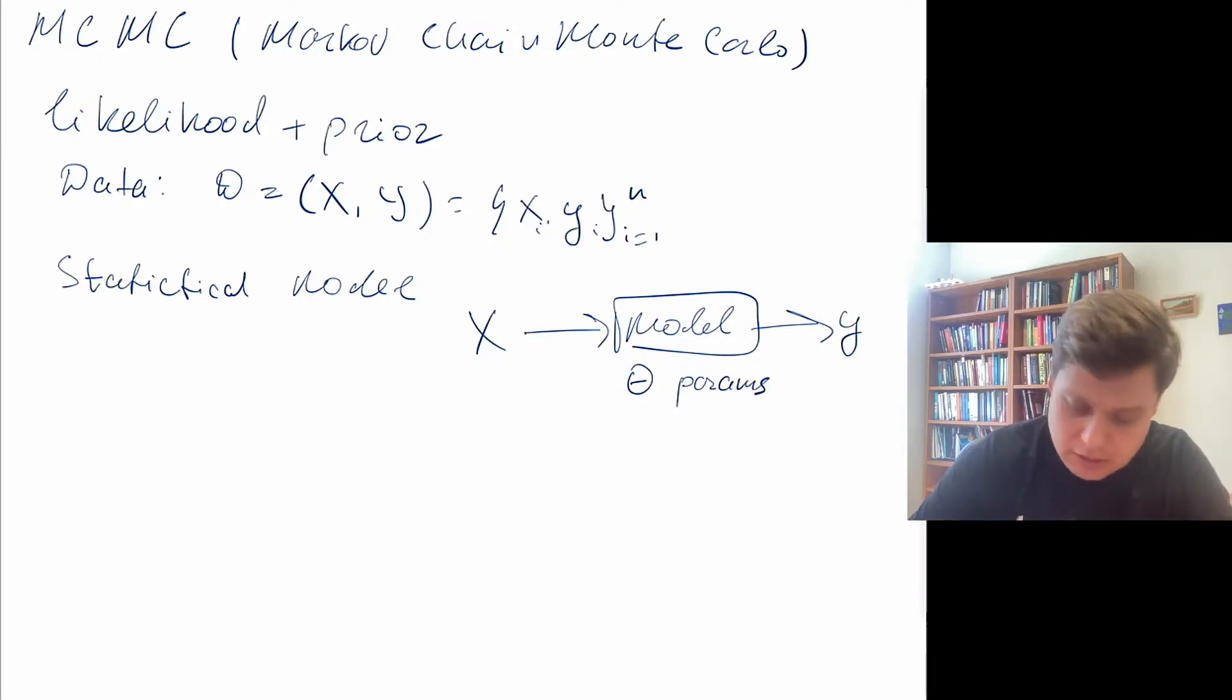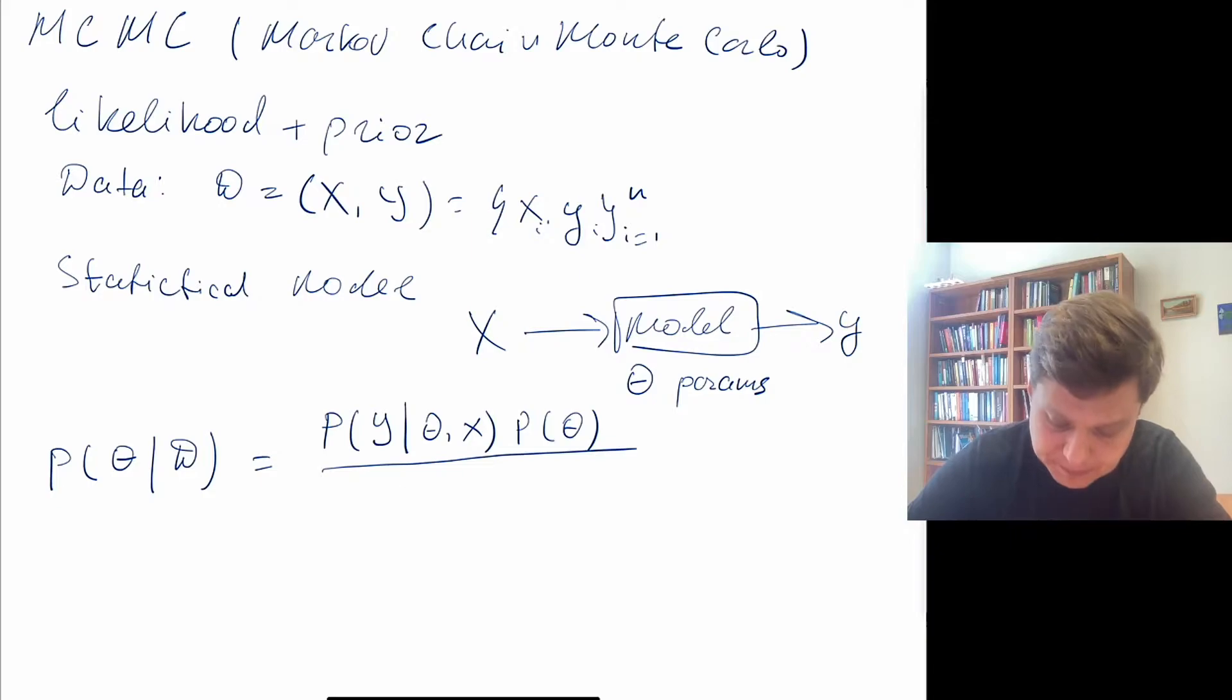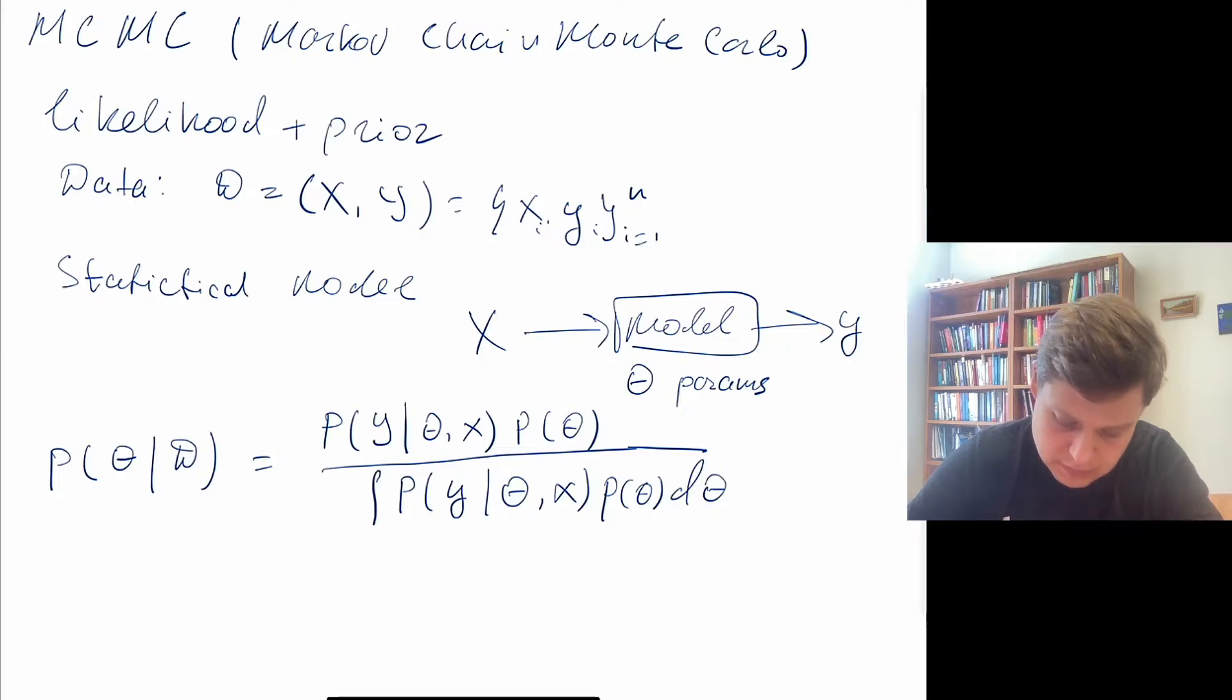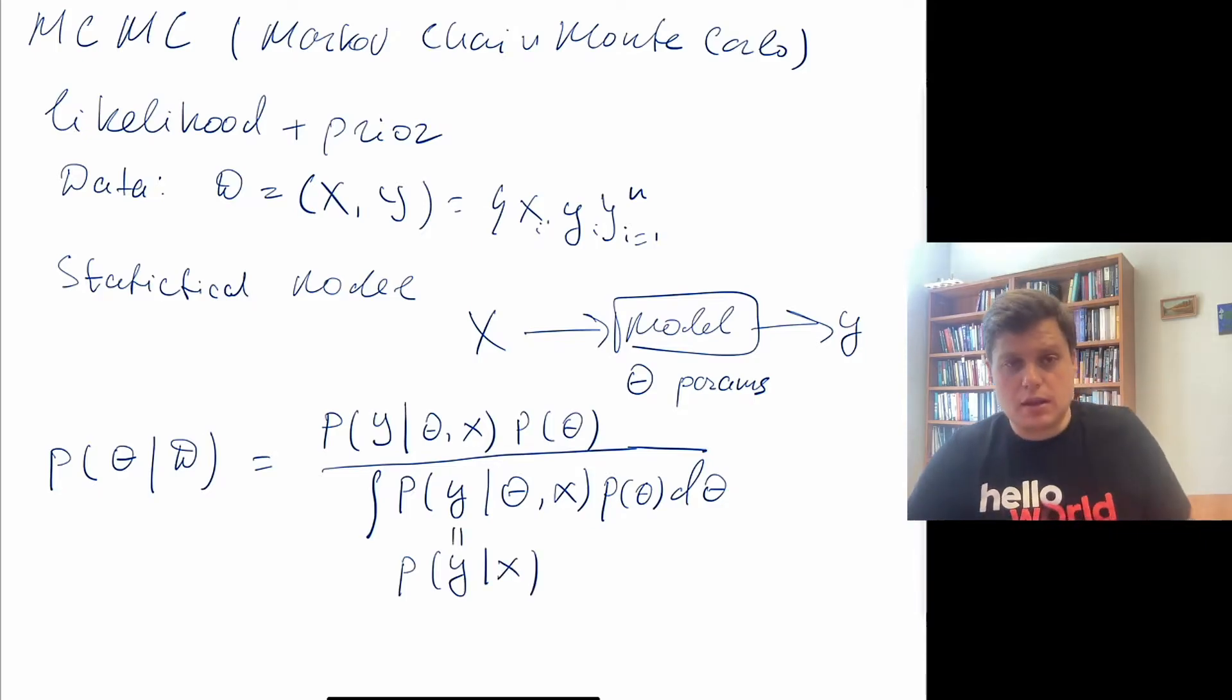And the goal of the Bayesian learning is to learn the posterior probability distribution of those parameters given the observed data set. And we use the Bayes rule to calculate that. So we use likelihood times the prior, and we divide by the total probability. And we integrate theta out. So this is just a probability of Y given X at the bottom. So this is the basic setup.